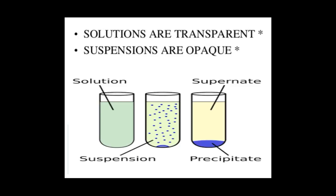There are many mixtures like this. If we want to differentiate between a solution and a heterogeneous mixture, solutions are always transparent. Other mixtures, for example suspensions, are not transparent. Here we can see that the blue dots represent solid particles, so we cannot call them solutions — they are called suspensions.